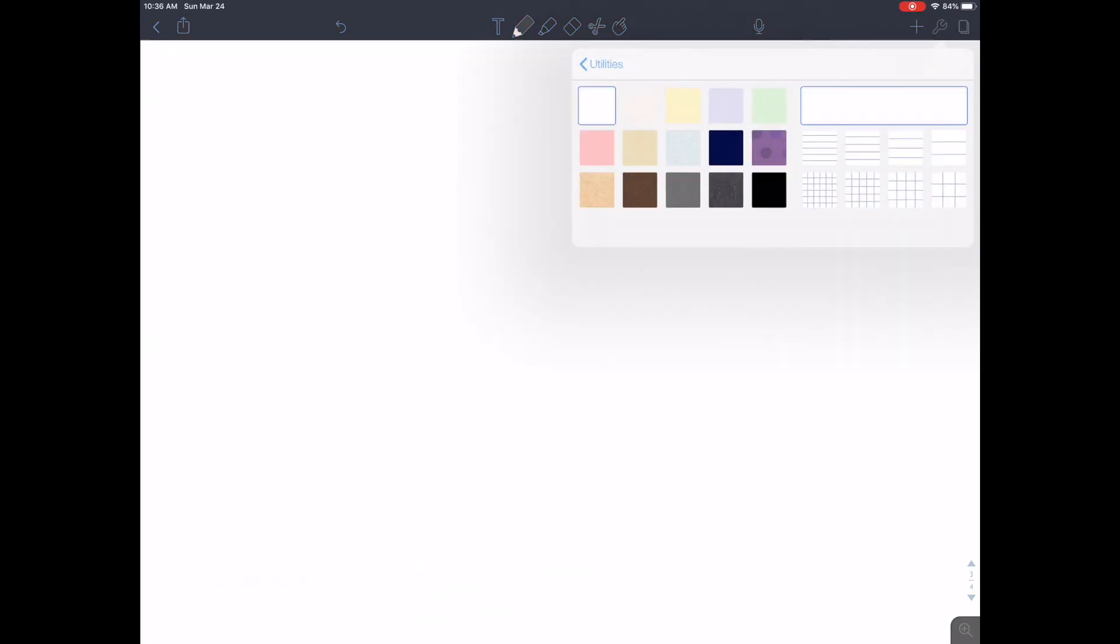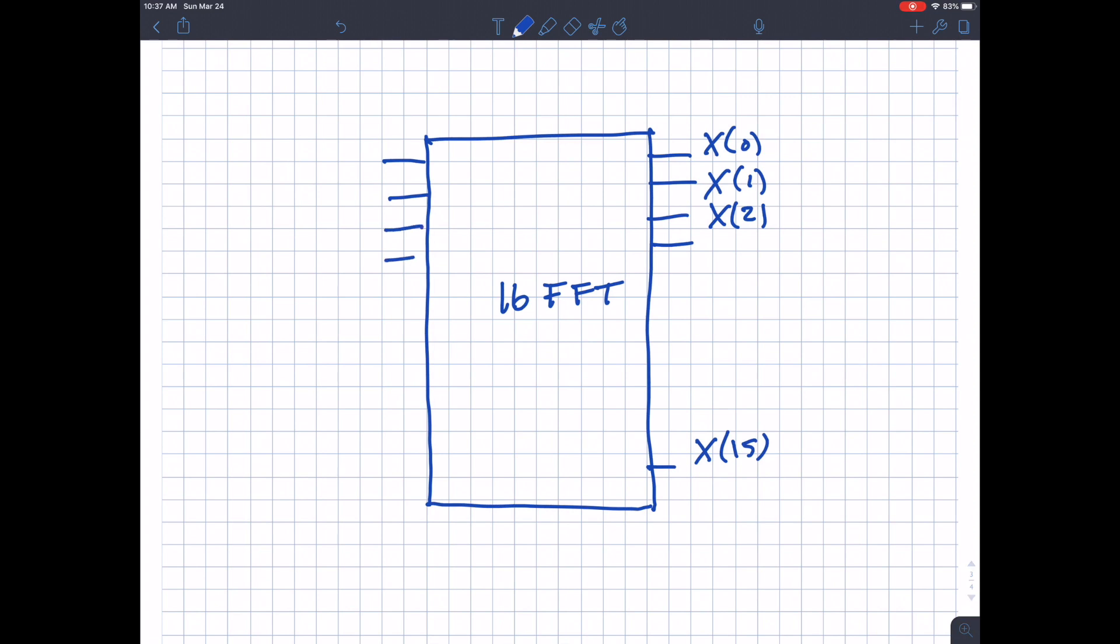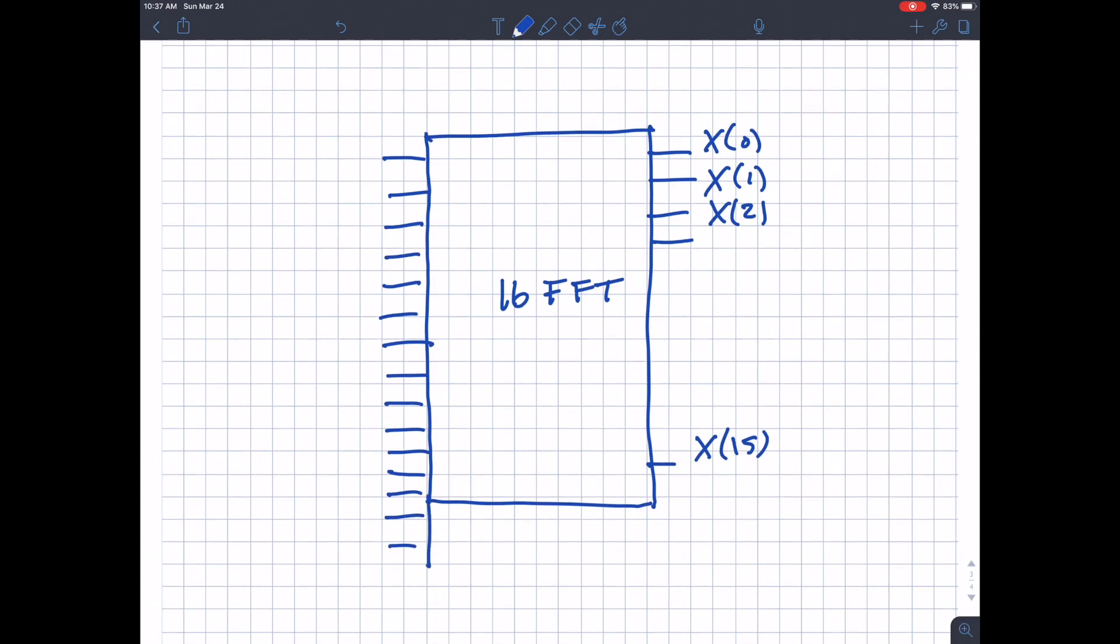I'm thinking that what I've got is this block diagram or this big block that's representing the 16 point FFT. So that's got all the signal flow connections. And coming out are the DFT coefficients or the DFT values from zero to 15. So my question for you is, can you figure out